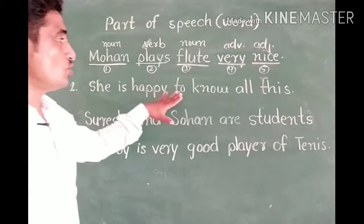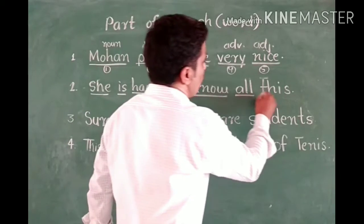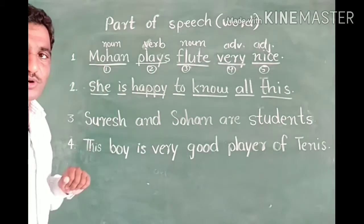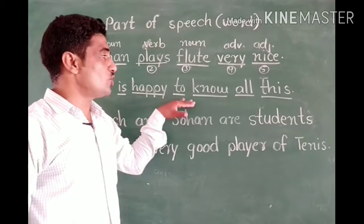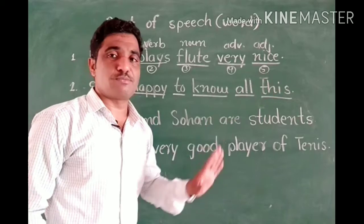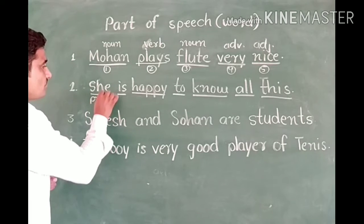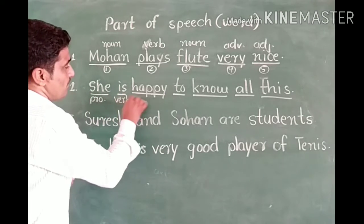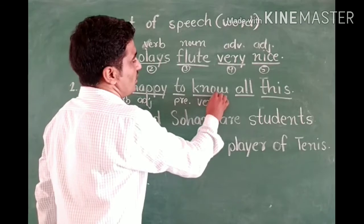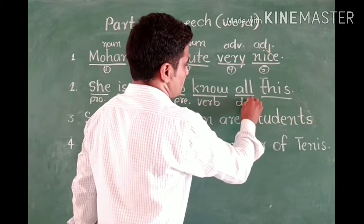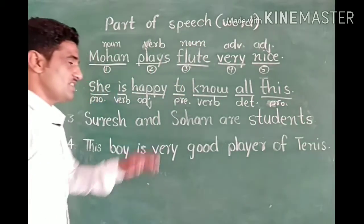Next example: 'She is happy to know all this.' In this speech, she is the pronoun. Is is a verb. Happy is the adjective. To is the preposition. Know is the verb. All is a determiner. And this is the pronoun. So in this speech there are also several parts and every part has a different type of word.